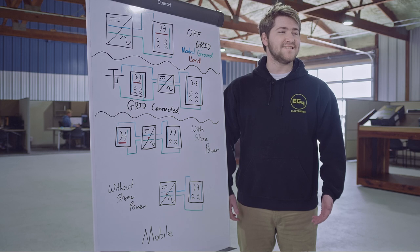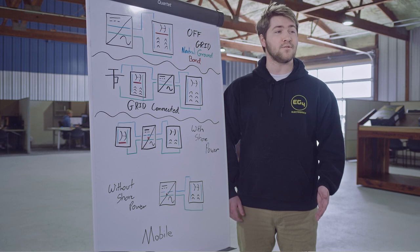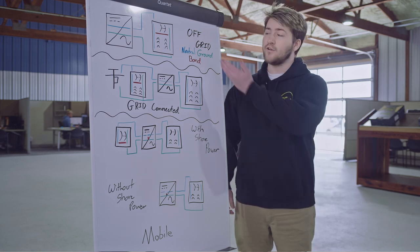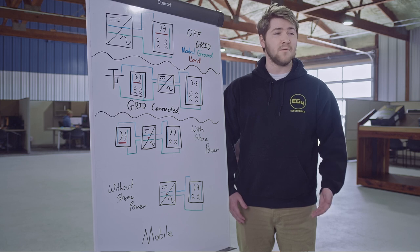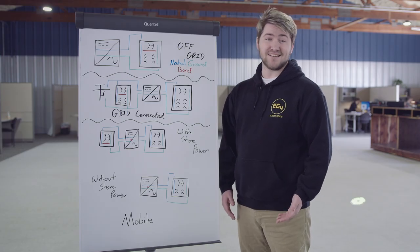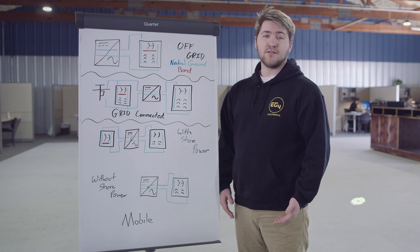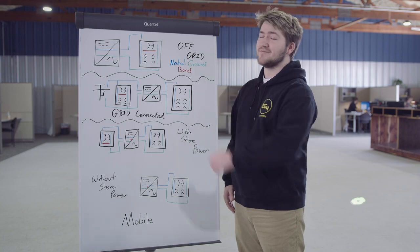The NEC states in Article 250.30A1 that you'll need a single system bonding jumper when using a separately derived system source. In an off-grid only situation, your output panel should have a bond jumper installed, which is common in all homes connected to the grid. In this case, the inverter is basically acting as the grid. Main output panels in an off-grid scenario require a main breaker to also conform with the NEC means of disconnect.